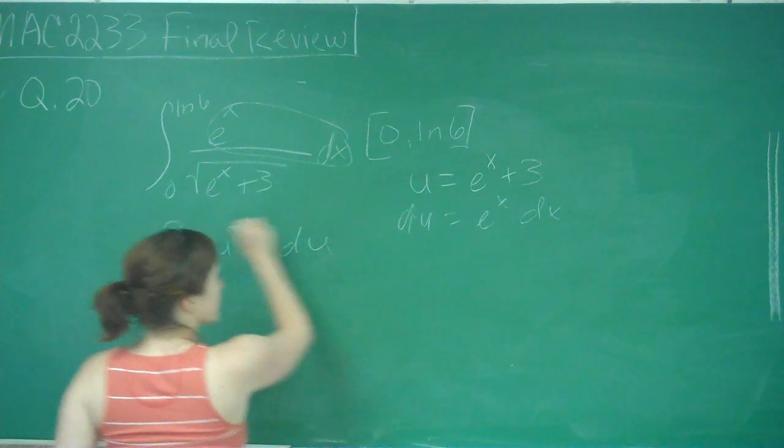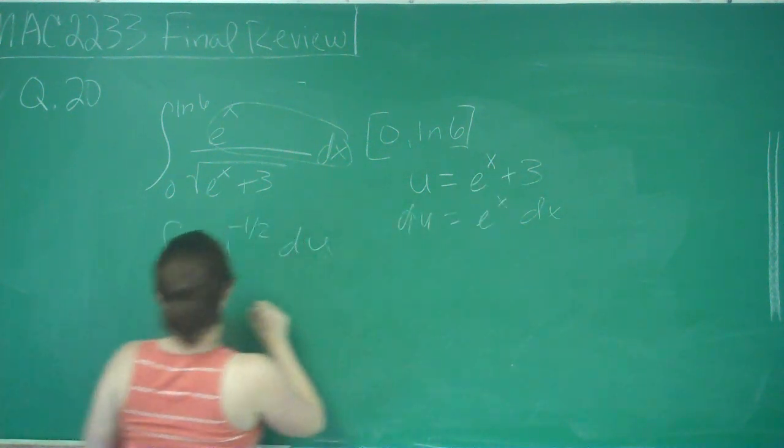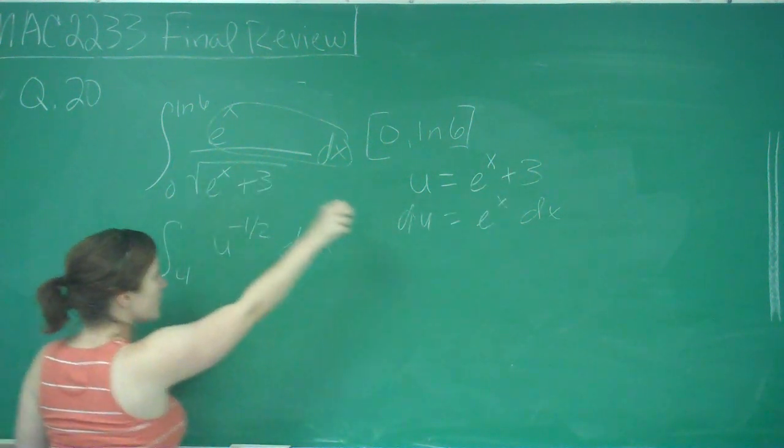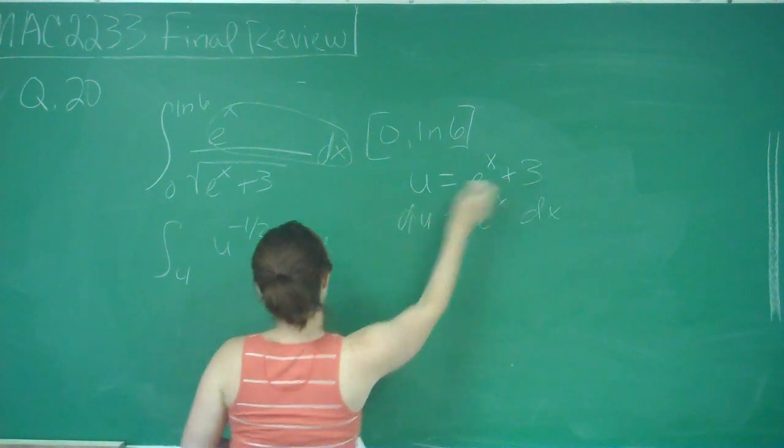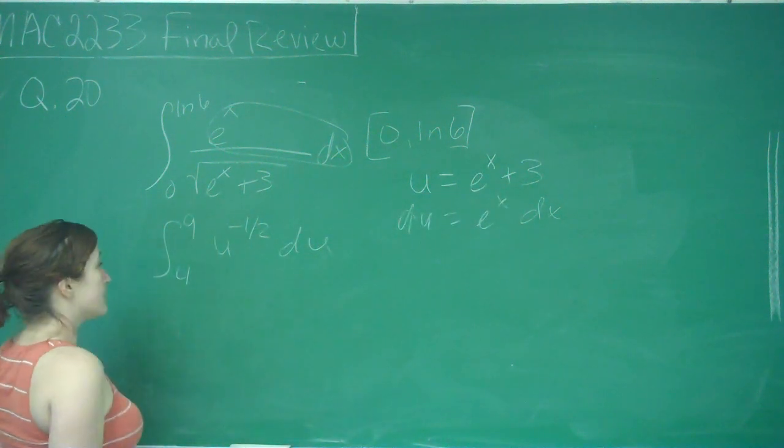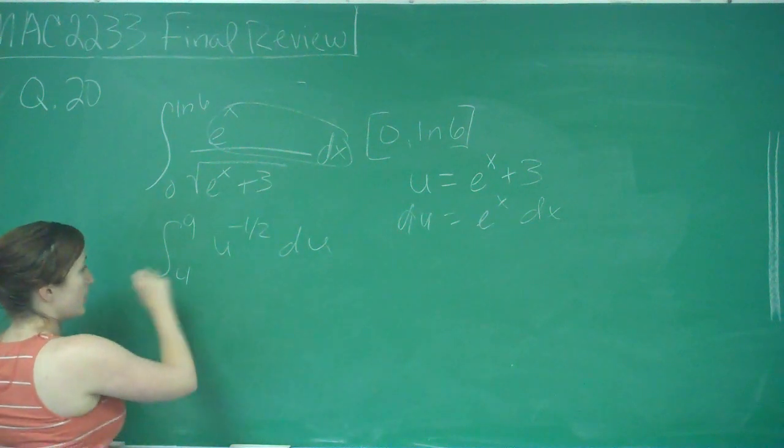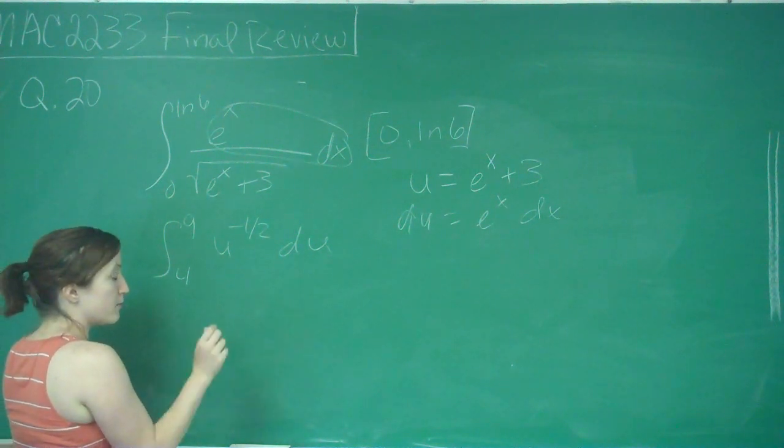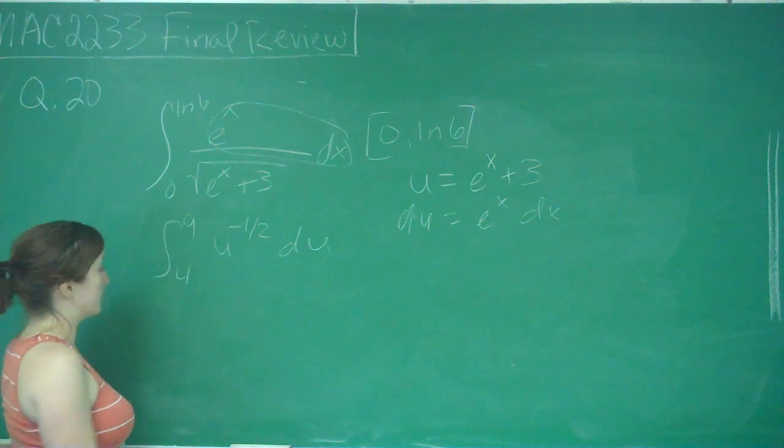When I plug in 0 here, I get e to the 0 is 1 plus 3, so that's 4. And plug in ln of 6, I get 6 plus 3, which is 9. So now I can just do the integral with u and never have to worry about what I set it equal to before.